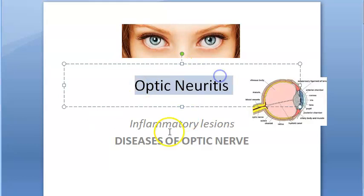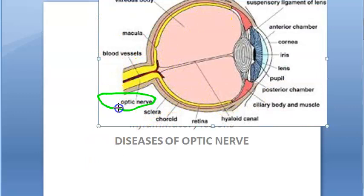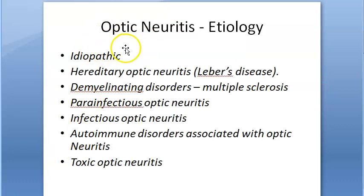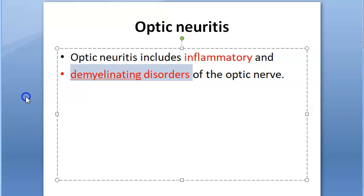In this video, let us look at optic neuritis. This is a disease of the optic nerve — it is an inflammatory lesion, hence 'neuritis.' The optic nerve is the second cranial nerve. Here you can see behind the eye the optic nerve, with all the retinal information feeding into it toward the brain. Optic neuritis includes both inflammatory and demyelinating disorders of the optic nerve.